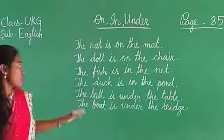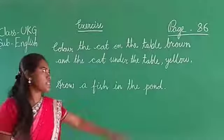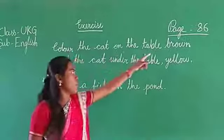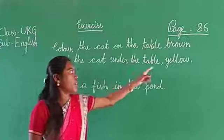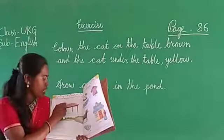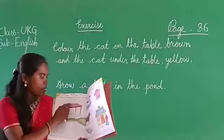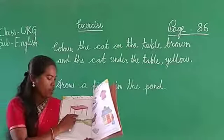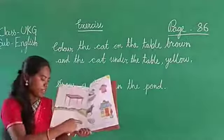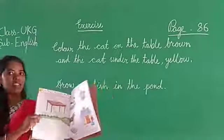So dear students, here we learned about on, in and under. Next we will see the exercise. Let's go to page number 86. It says: color the cat on the table brown and the cat under the table yellow. The cat on top is brown and the one below is yellow. Next: draw a fish in the pond. A pond is given, so you have to draw a fish in the pond. Time to do this exercise in your book. Thank you.